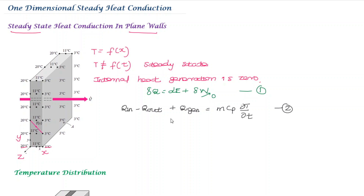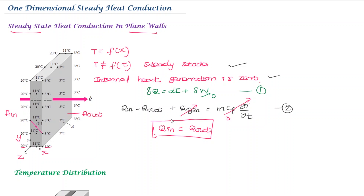With steady state and internal heat generation equal to zero, the rate of change becomes zero. So the equation simplifies to Q_in equals Q_out. Using Fourier's law, Q equals minus k·A·dT/dx. Since area and thermal conductivity are constant, dT/dx equals a constant.